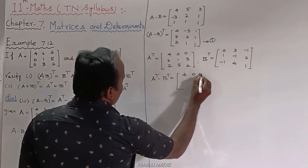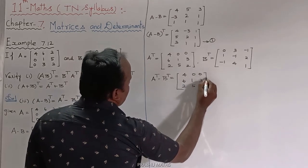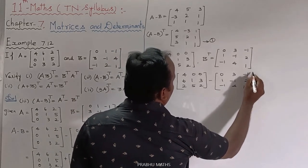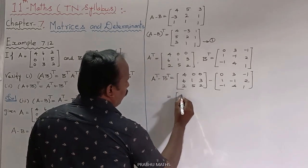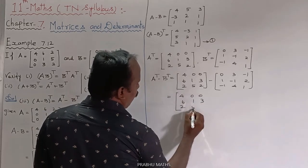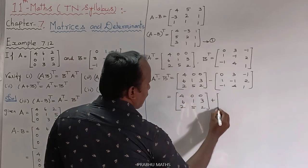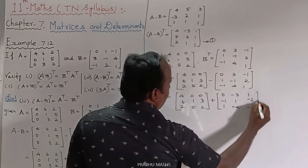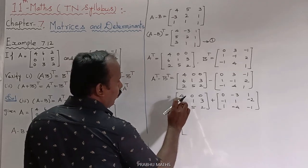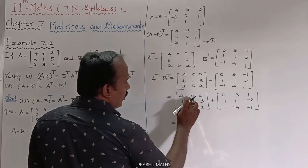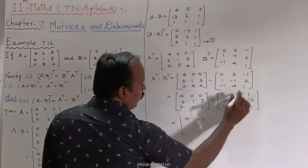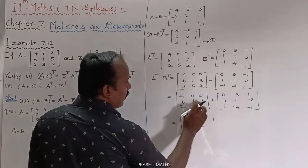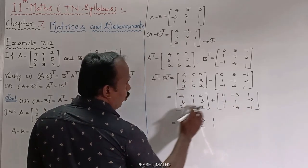To find A transpose minus B transpose: A transpose is [4, 0, 0; 6, 1, 3; 2, 5, 2] minus B transpose [0, 3, -1; 1, -1, 2; -1, 4, 1]. Computing element-wise: 4 - 0 = 4; 0 - 3 = -3; 0 - (-1) = 1; 6 - 1 = 5; 1 - (-1) = 2; 3 - 2 = 1; 2 - (-1) = 3; 5 - 4 = 1; 2 - 1 = 1.